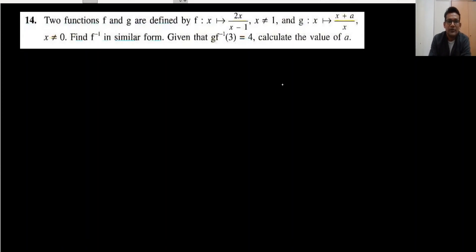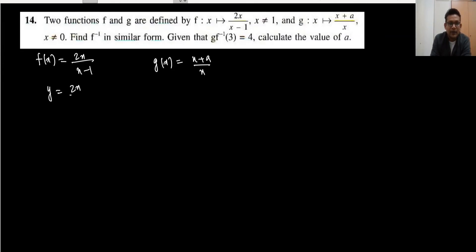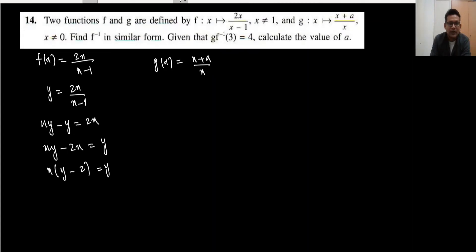Question number 14. Two functions are given: f(x) = 2x/(x-1) and g(x) = (x+a)/x. We need to find f⁻¹ and then find the value of a given that g(f⁻¹(3)) = 4. To find f⁻¹: set y = 2x/(x-1), cross multiply to get xy - y = 2x, so x(y-2) = y, giving f⁻¹(x) = x/(x-2).